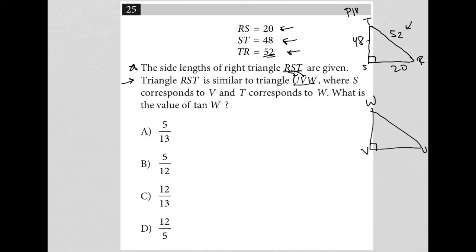What is the value of tan W? All right, so what do we know about right triangles? Well, we know all angles add up to 180. We also know that for similar triangles, the angles are the exact same, and the side lengths are proportional.